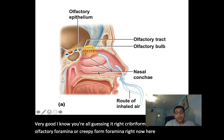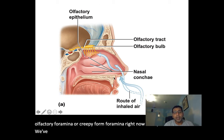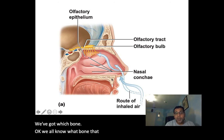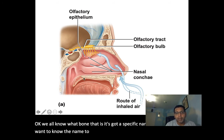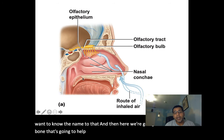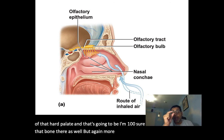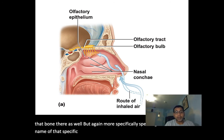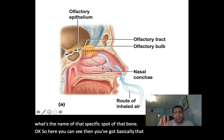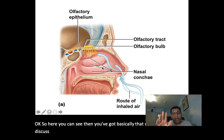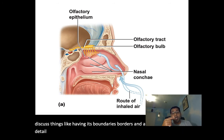Here we can see another bone making up the posterior one-third of the hard palate. You can appreciate the nasal cavity and its boundaries — we'll discuss those in greater detail when we get to the respiratory system.